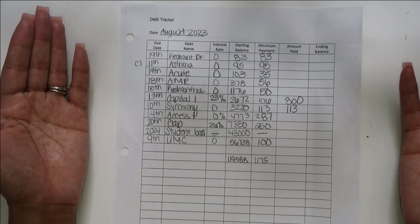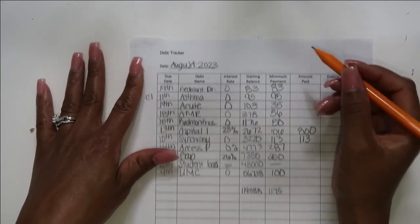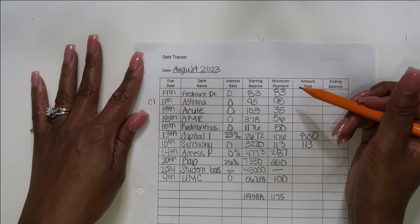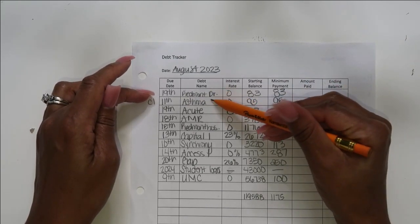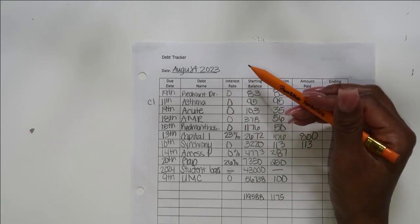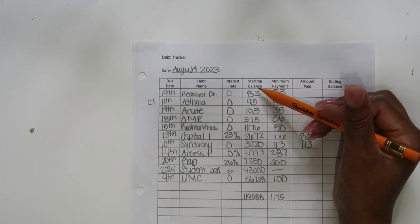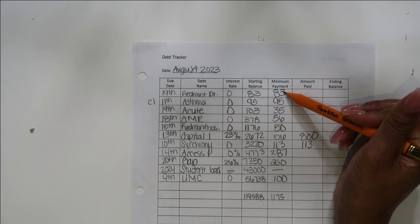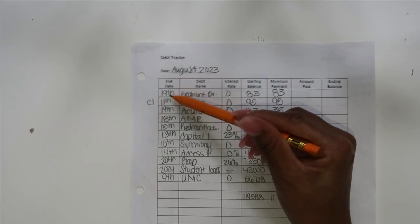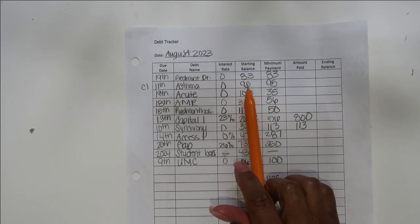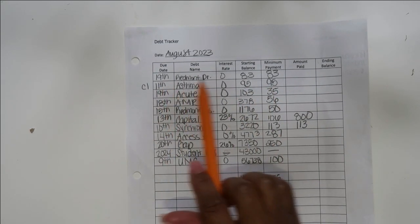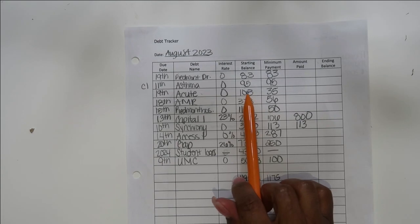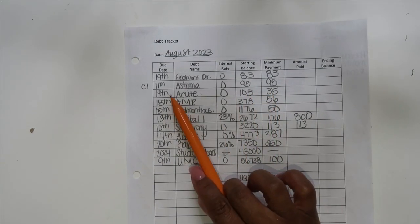But anyways, let's go over this month's debt tracker. So Piedmont is a new one. This says doctor, this means that I'm paying the doctor and the bill that I got for them was only $83, so thank goodness for that. I'm going to pay that $83 off this month. It's not due to the 19th. Asthma, the starting balance is $95. I'm just going to go ahead and pay that $95. It's due on the 11th.